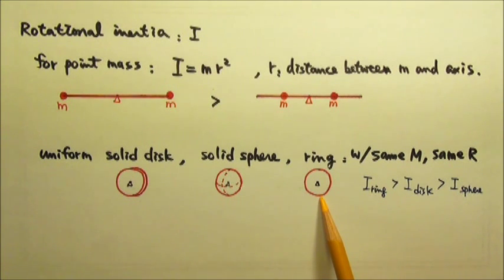The ring has the largest rotational inertia because all of the mass of the ring is the same distance r away from the axis, which is the farthest possible.